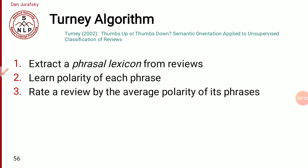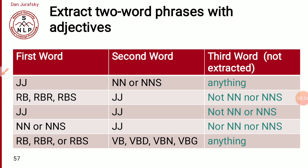The second method is Turney's algorithm. In 2002, Turney proposed an algorithm based on semi-supervised learning, using POS tagging as a feature. They extracted phrasal lexicons from reviews. First, they tag the data using POS tagging — tagging each token with a tag like noun, pronoun, verb, or adjective. The algorithm works in three steps: first extract all phrasal lexicons from the review, then learn the polarity of each phrase, then rate a review by the average polarity of its phrases.